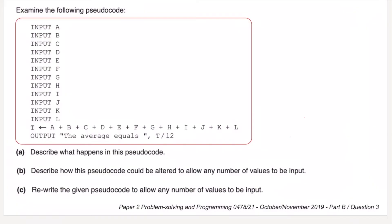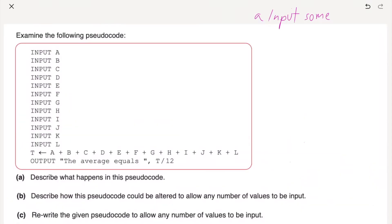For this second one, examine the following code. We've got some code here, input A, B, all the way down to input L. We've got 12 different values. Then on the next line, total T, probably for total, has been assigned the value of A, B, C, D, E, F, all the way to L, added together. And then it's going to output the average equals basically total T divided by the number, which is 12, to give us the average. So that's what we're describing in this pseudocode. So I will write that down: inputs some values, then it finds a total, and finally it calculates and prints average.